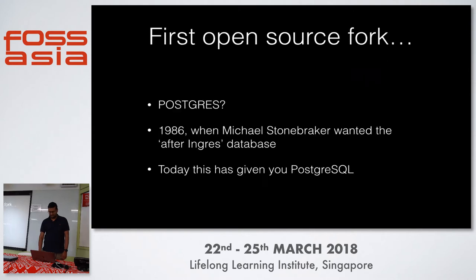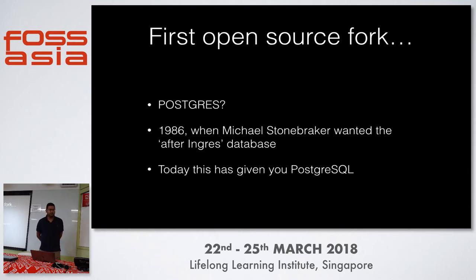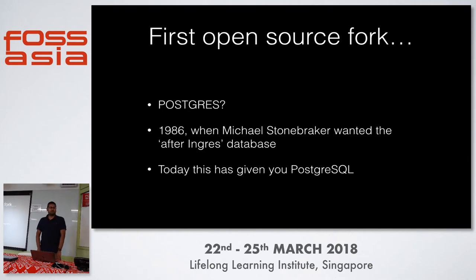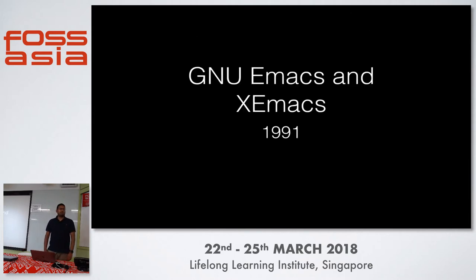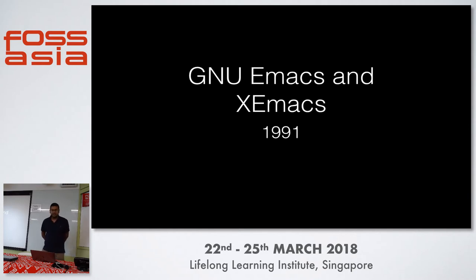The first open source fork I could track is actually Postgres — when Michael Stonebraker decided he wanted something after Ingres. Today that project is what you're familiar with as PostgreSQL. The first probably well-known fork in the open source world was a database. But maybe one of the better known forks is GNU Emacs — anyone here use Emacs?